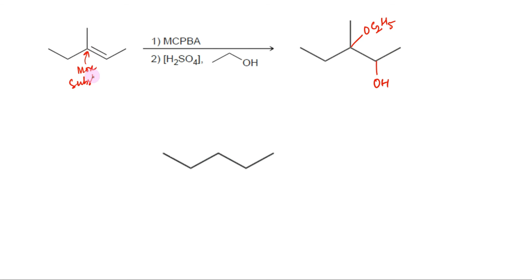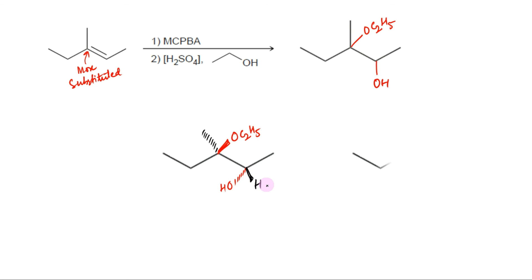Both anti-enantiomers will be formed. The stereochemistry of groups added and already present on the double-bonded carbons can be written easily. Ethanol above the plane, so methyl already present goes down the plane. OH down the plane, so that hydrogen already present goes above the plane. The other enantiomer will have the opposite stereochemistry — ethanol down the plane so that methyl is above the plane, and hydroxyl group above the plane so that hydrogen is down the plane.